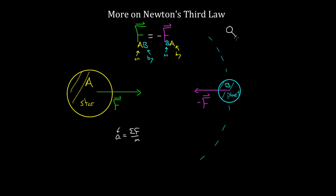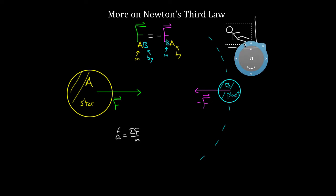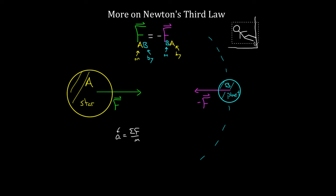Even if I came in Chuck Norris style trying to drop-kick some wall, as soon as I start to make contact with the wall, I'm going to exert a force on the wall to the right — the force on the wall by my foot — and there'd have to be an equal and opposite force instantly transmitted backwards on my foot, the force on my foot by the wall. This happens instantaneously. There is no delay. You can't kick this wall fast enough for this other force to not be generated instantaneously.